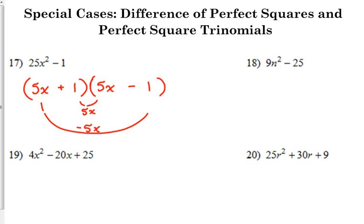Number 18. Similar. No GCF. The square root of 9 is 3. So we've got 3 in both sets of parentheses. The square root of 25 is 5 plus minus.